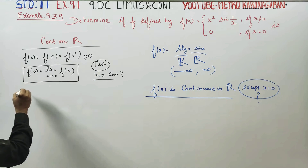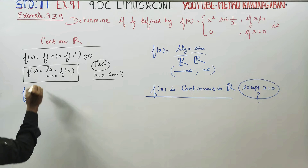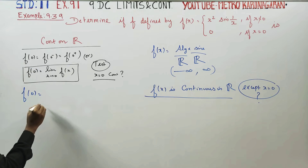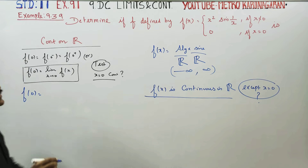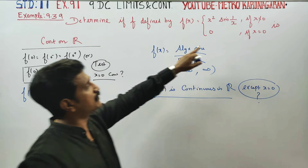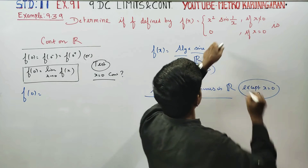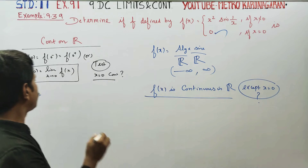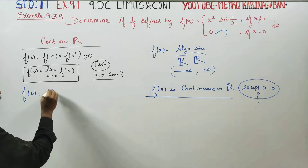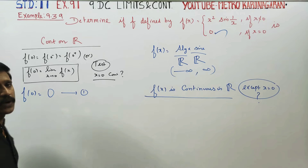Now I am going to find f(0). When x is equal to 0, f(0) — the answer is 0. This is Result number 1.